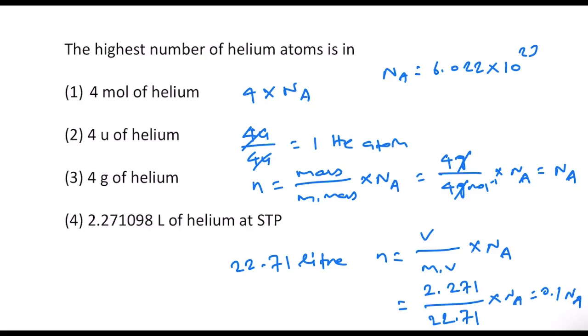And therefore, option 1 is correct because that will have 4 times Avogadro number of helium atoms. Therefore, that will have the highest number of helium atoms.